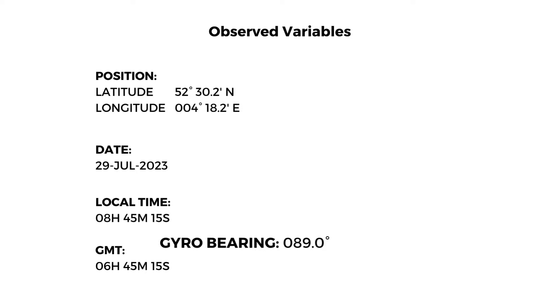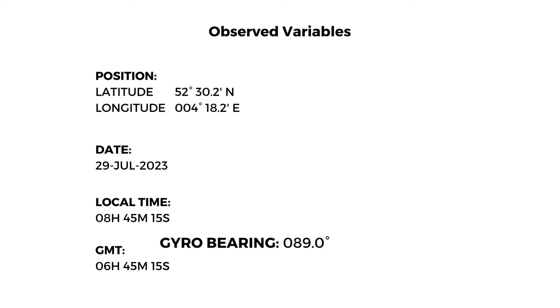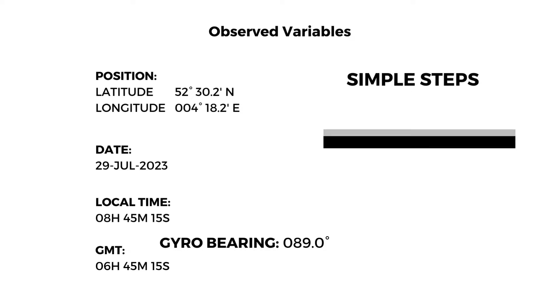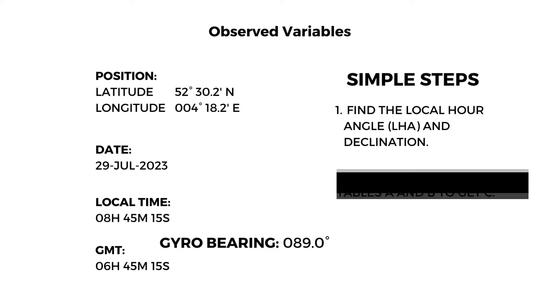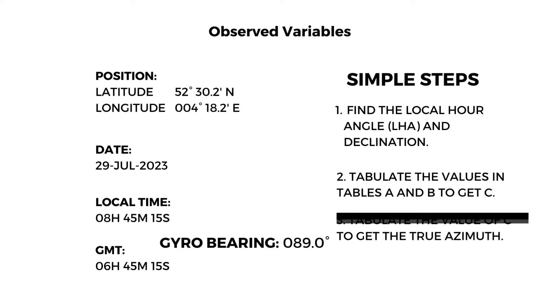Take good notes of the given variables because we will be using each one of them to find the gyro error. But first, here are the simple steps that we will take. Step one: find the Local Hour Angle (LHA) and declination.